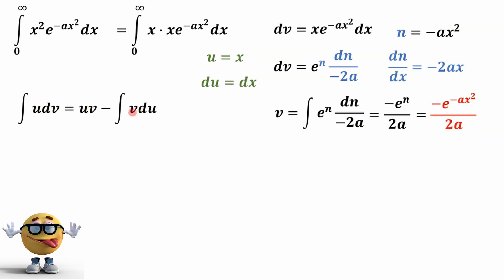So we got everything we need for integration by parts. We'll substitute that in. So u is x. V is this thing right here that we just found out. And that gets evaluated from 0 to infinity. Notice the limits of integration don't change because we're still in terms of x. And now v is negative e to the negative ax squared over 2a dx.